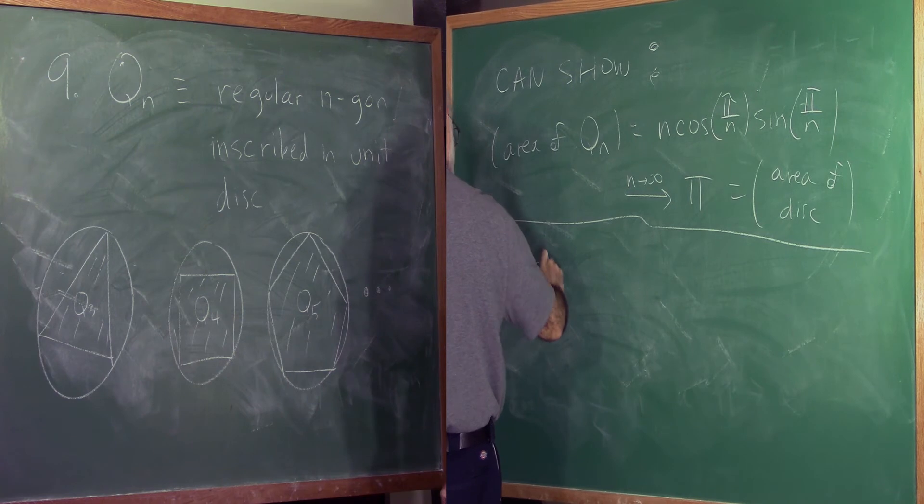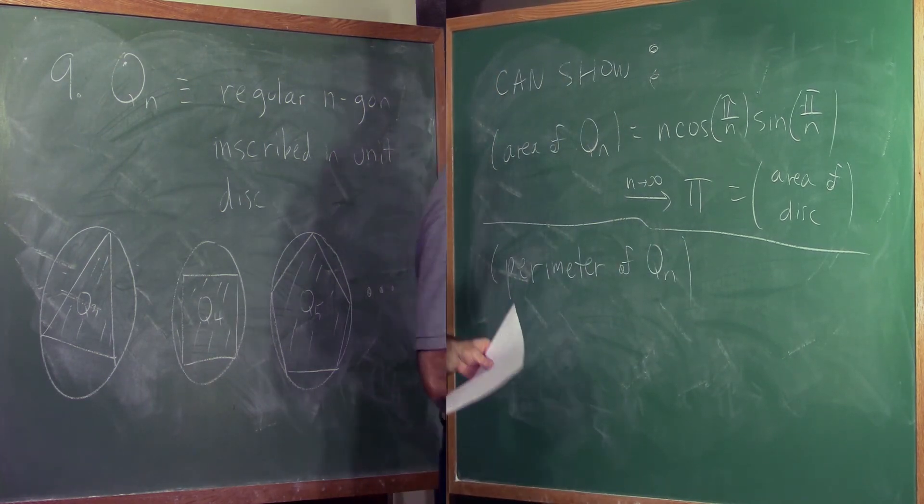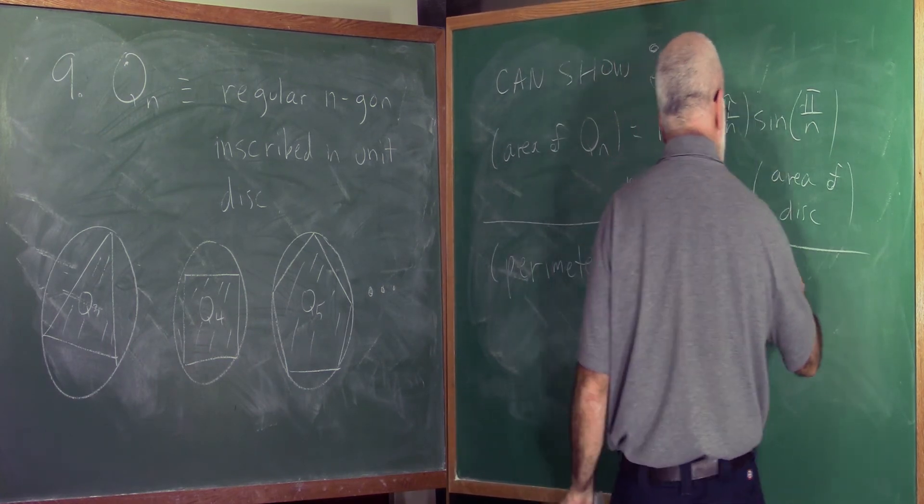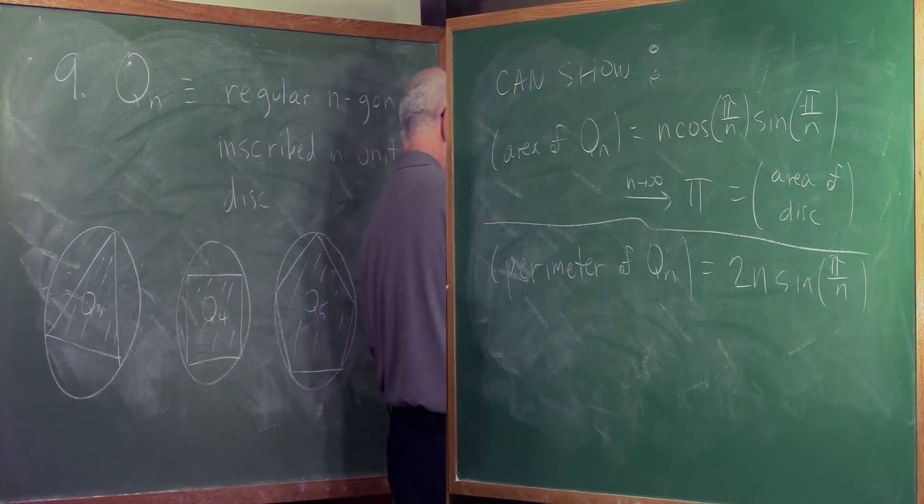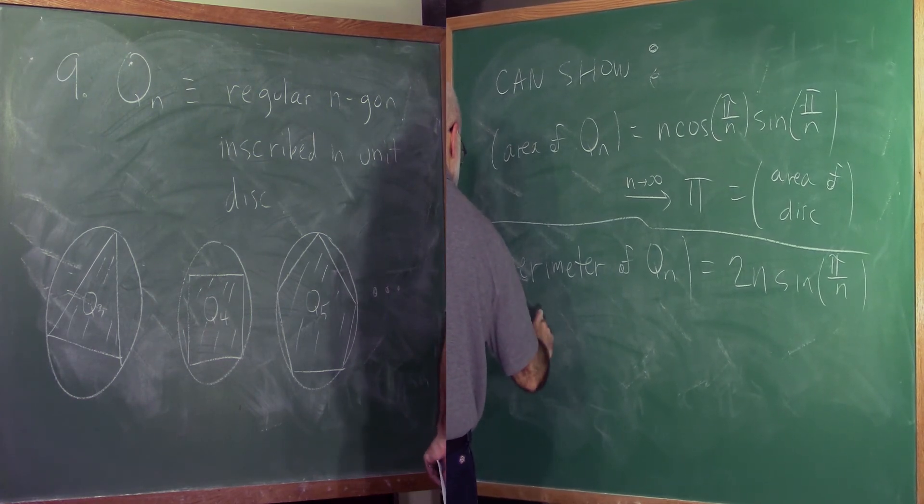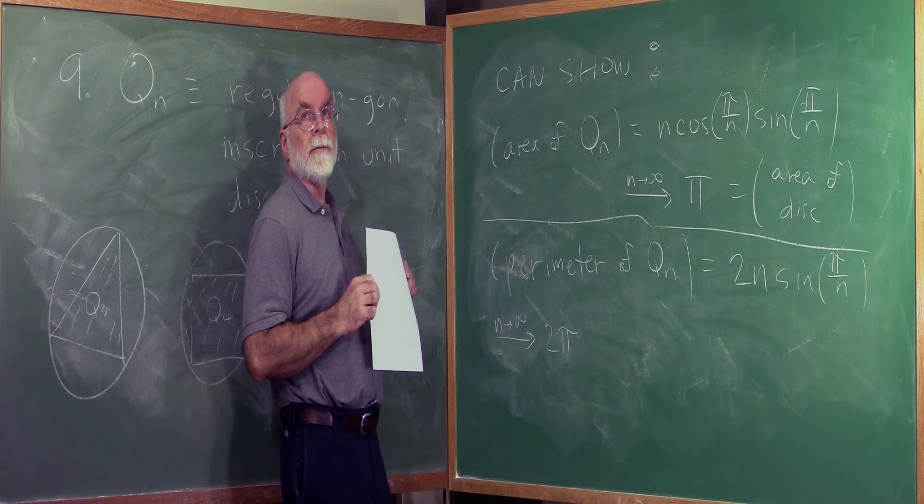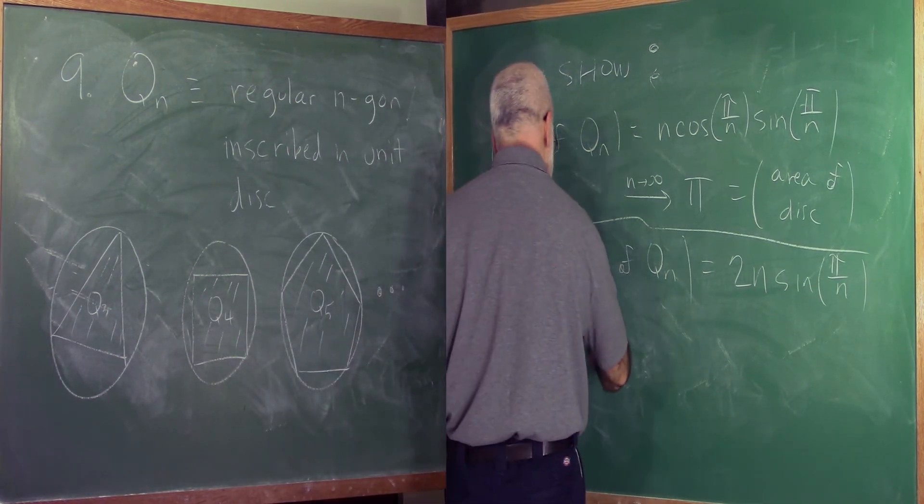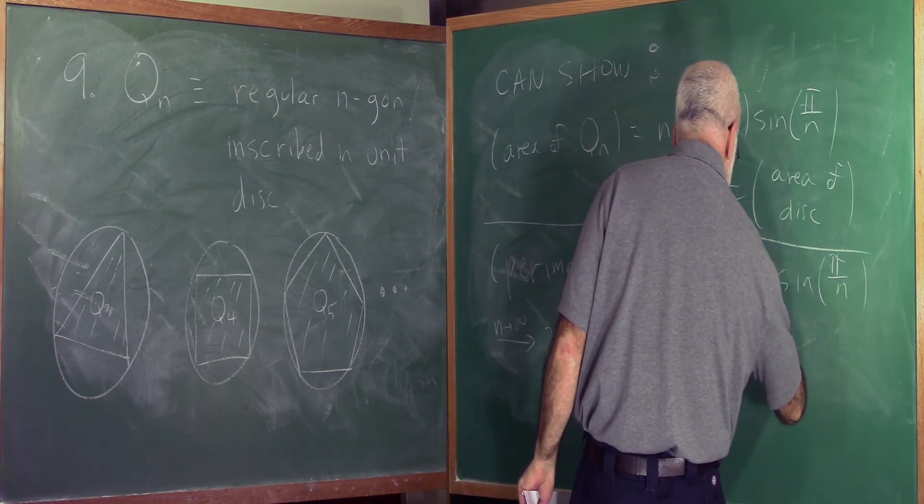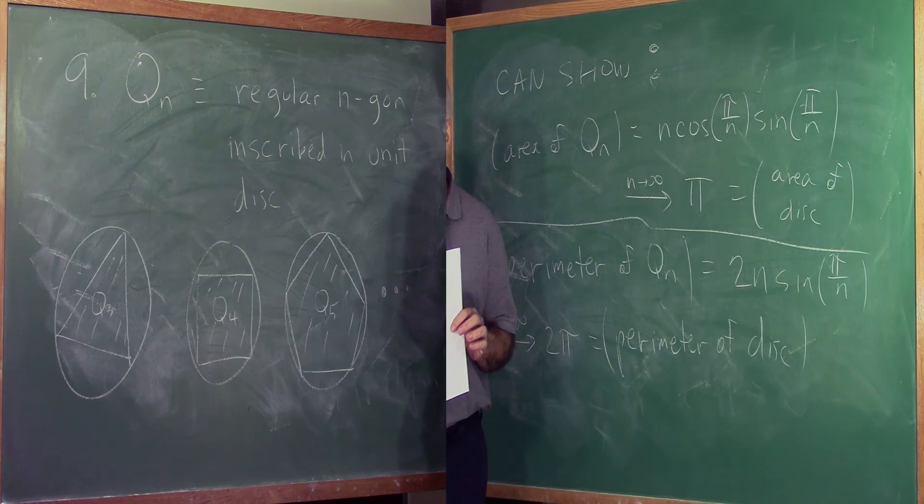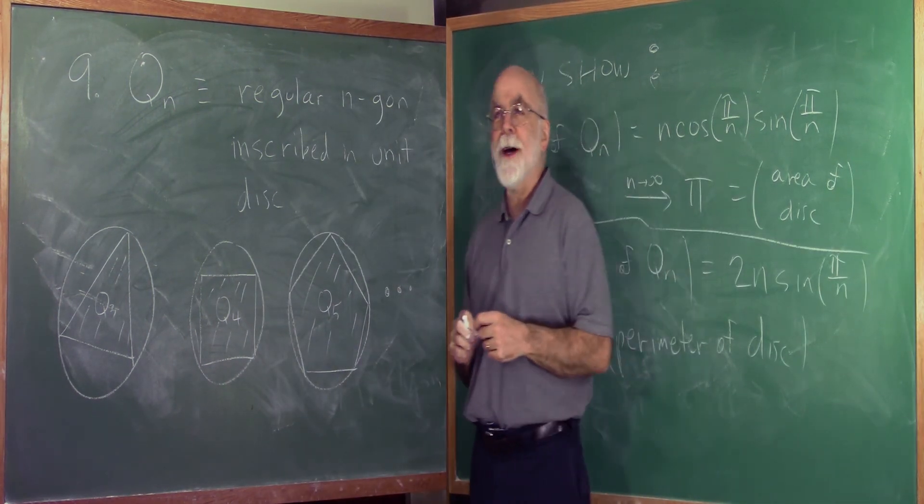When you look at the perimeter, get a slightly simpler expression. That turns out to converge to 2 pi, which you might recognize as the perimeter of the circle. Circumference is more traditional word. So that time the convergence worked for both the area and the perimeter. You never know. You never know in general. It's something that you should worry about at all times.